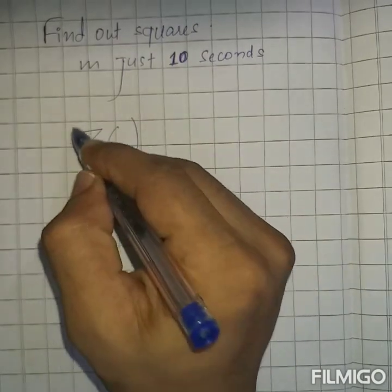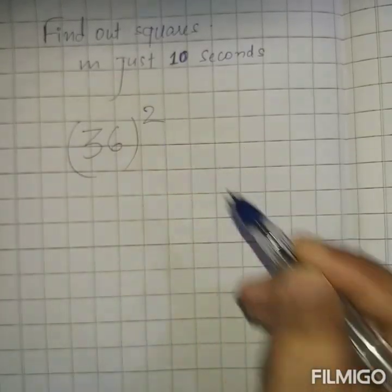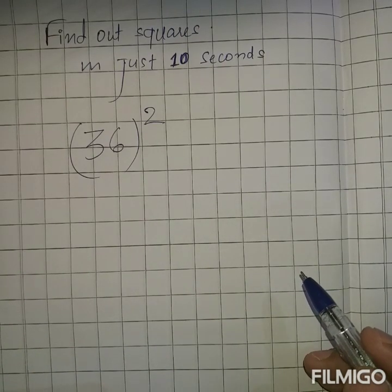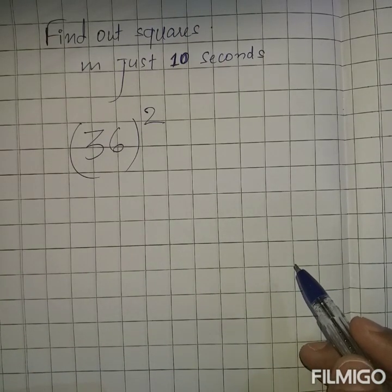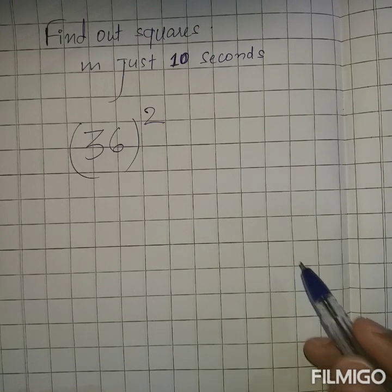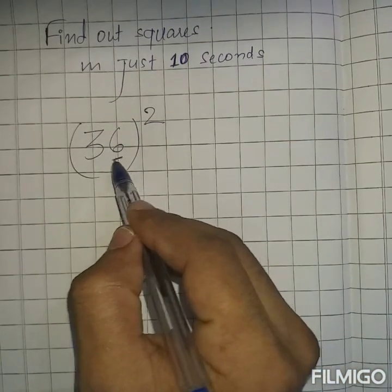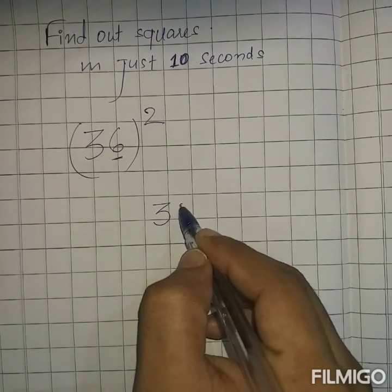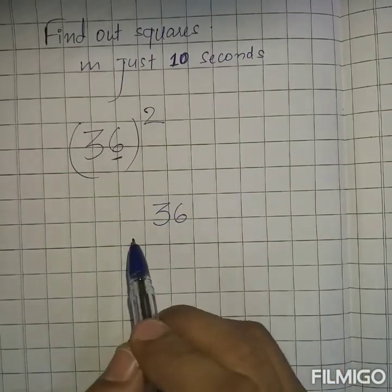Let's take an example. Let's take number 36. Let's find out the square of number 36. First step, step number one: write the square of the unit place number. Who's at the unit place? Number six. So write its square. Square of six is 36. 6 into 6, 36.